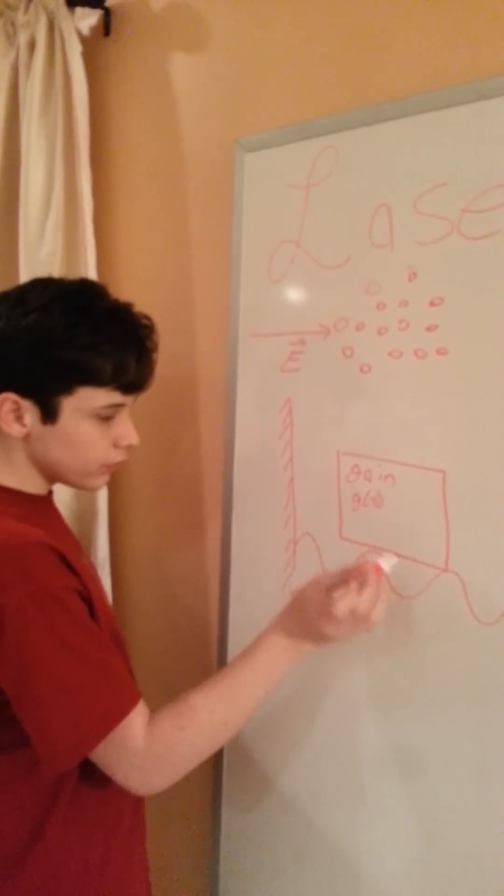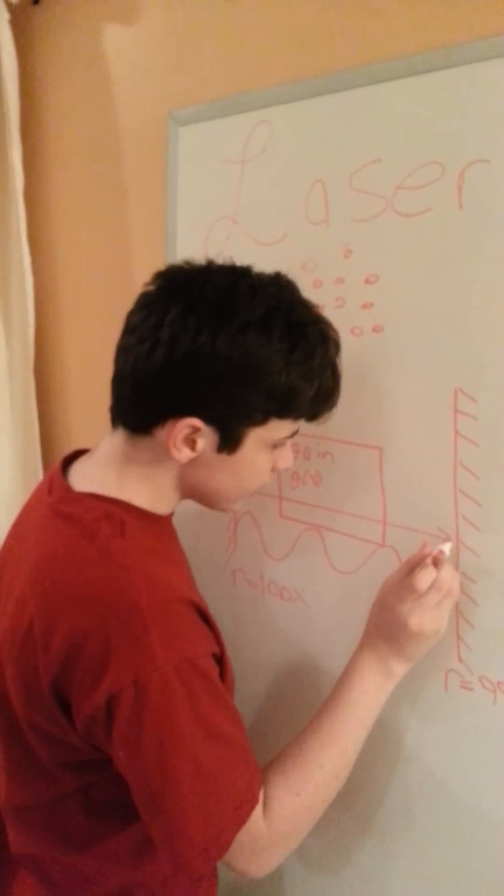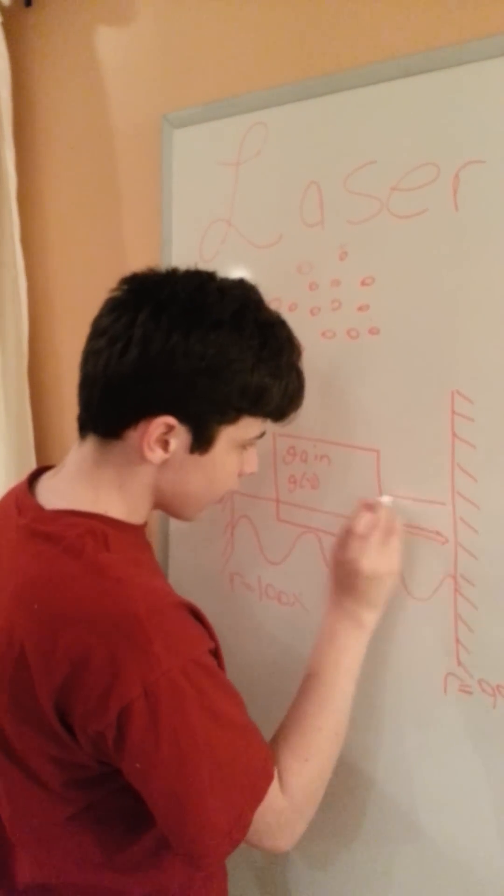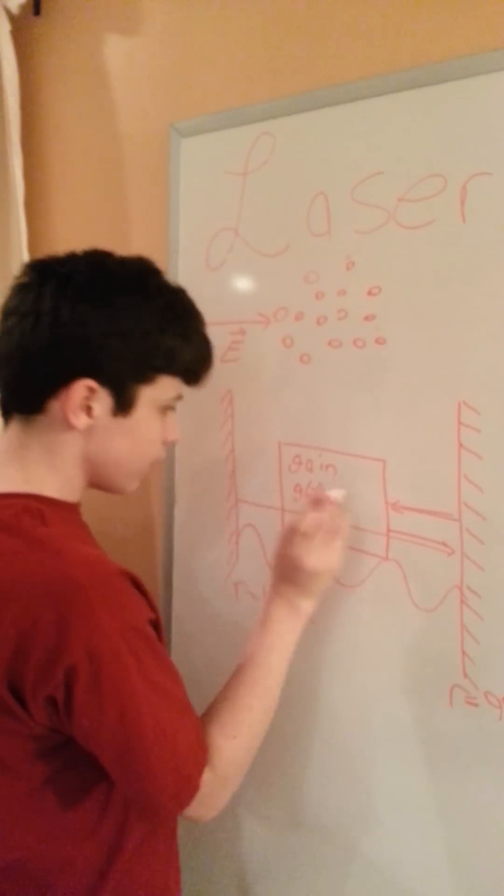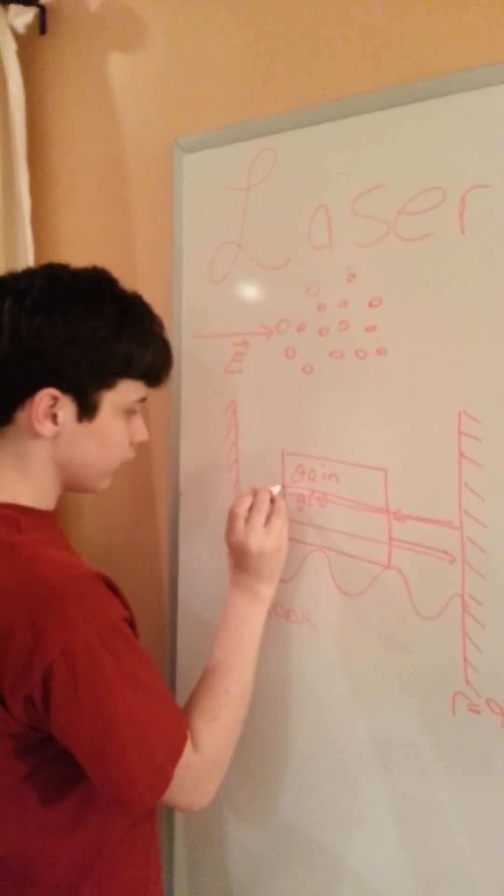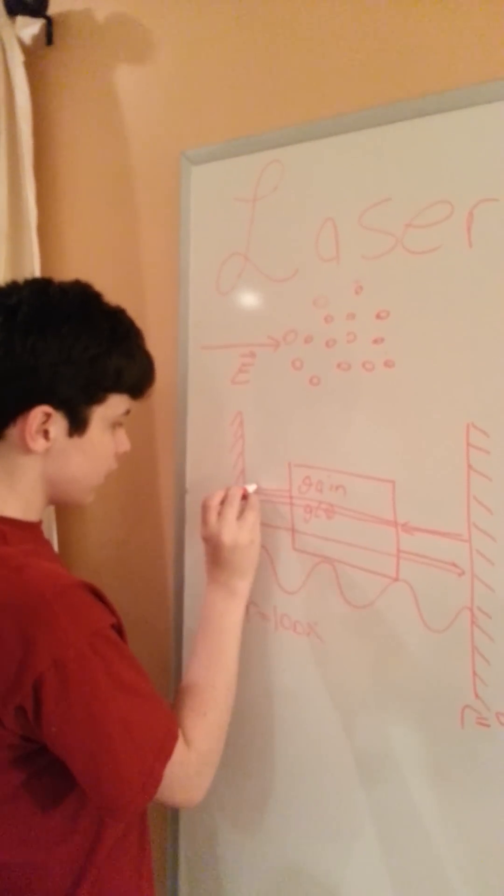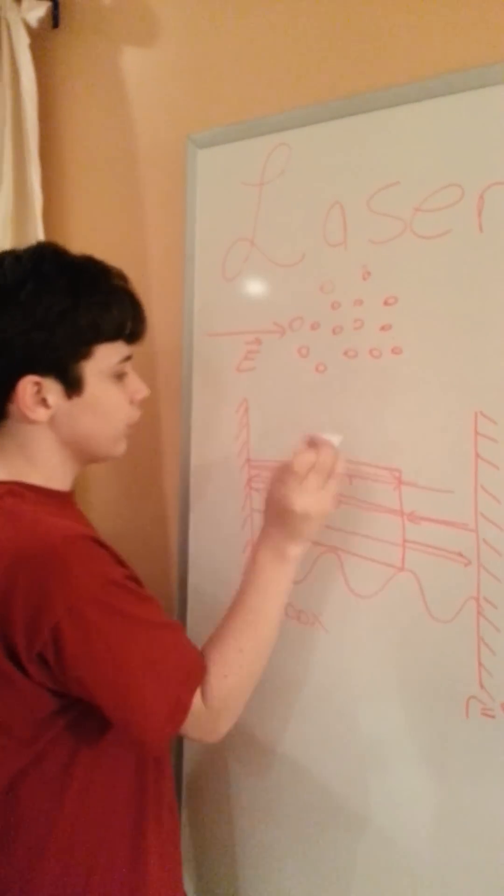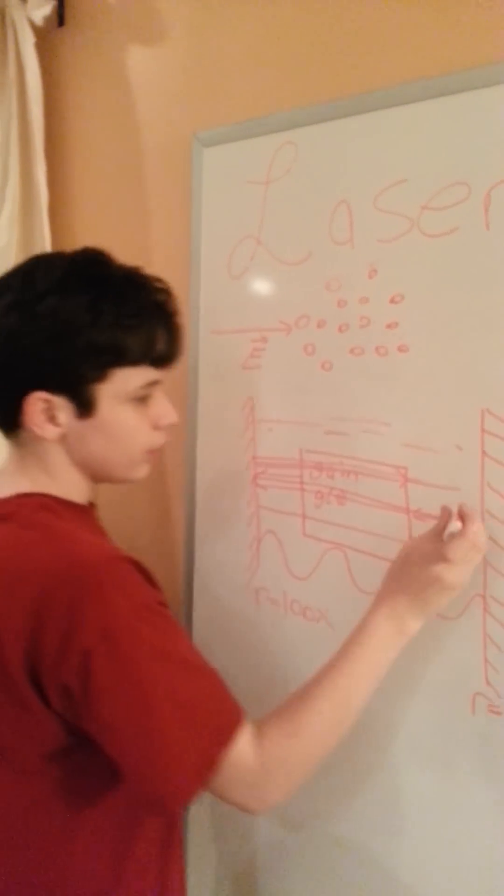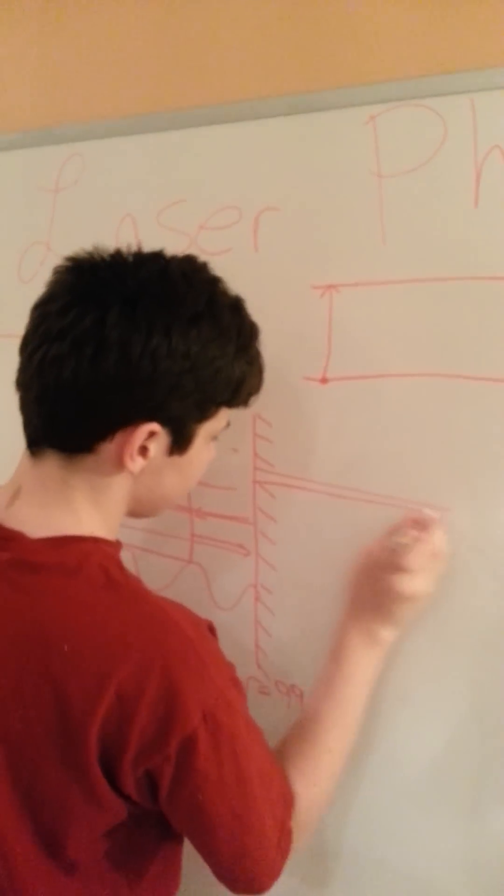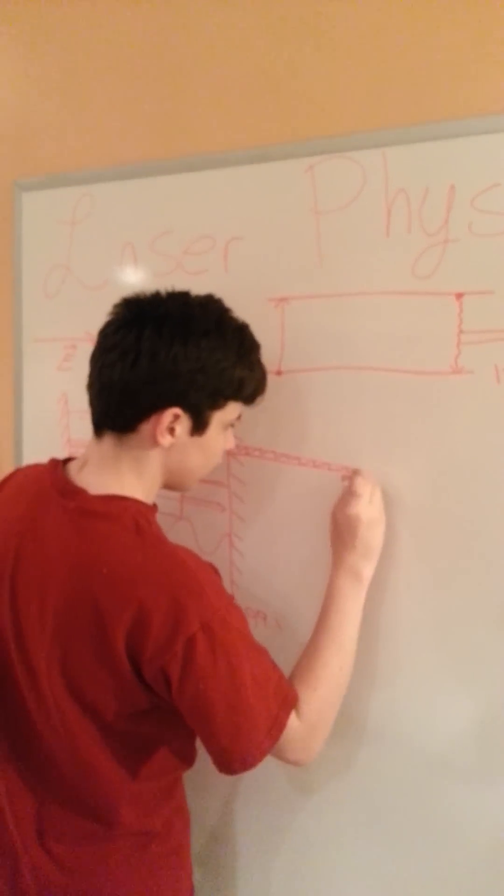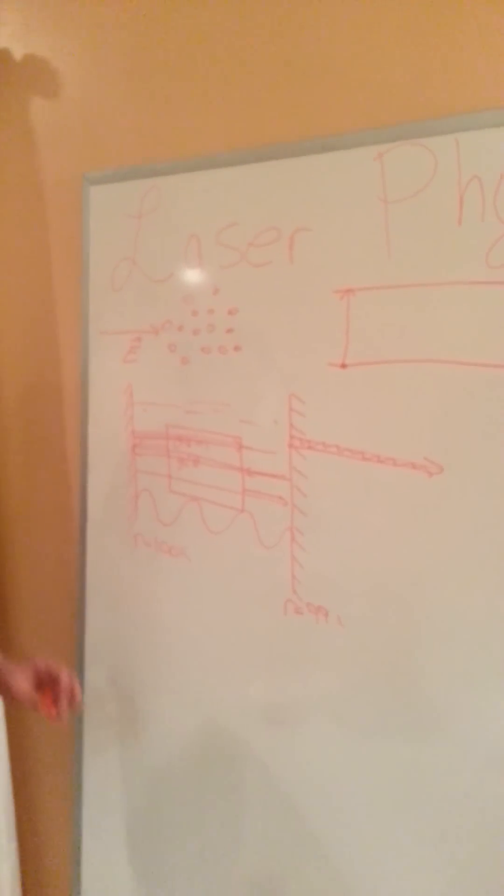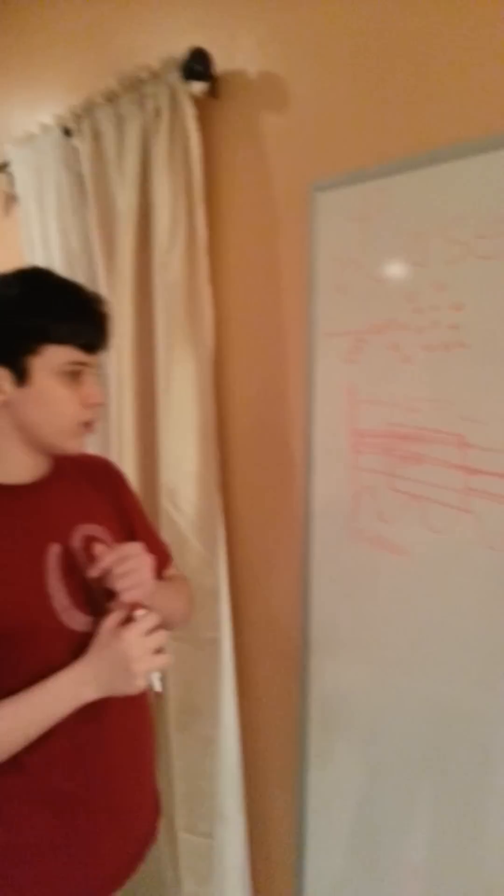What the gain does is I have some light, and then it grows, and then it goes in, and it goes back out, and then it reflects again. After doing this a whole lot of times, it comes out as one really big light wave, this intensified light wave.